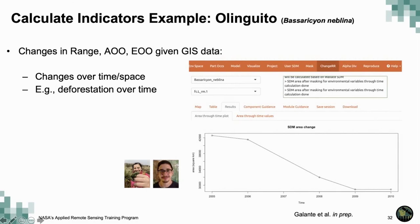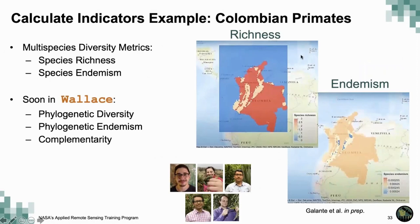You can see how your distribution would change given remote sensing products. We're also integrating how to calculate multi-species indicators. At this point, Wallace can compute measures of species richness and species endemism — the maps shown are richness and endemism for primates in Colombia. Very soon we will be integrating other measures like phylogenetic diversity, phylogenetic endemism, and complementarity, to think about conservation at a multi-species level.